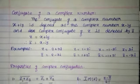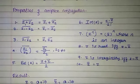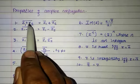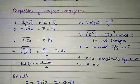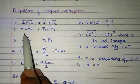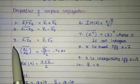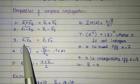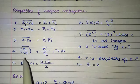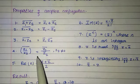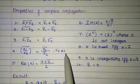Properties of complex conjugates. First: z1 plus z2, the whole bar, equals z1 bar plus z2 bar. Second: z1 minus z2, the whole bar, equals z1 bar minus z2 bar. Third: z1 into z2, the whole bar, equals z1 bar into z2 bar. Fourth: z1 by z2, the whole bar, equals z1 bar by z2 bar, where z2 is not equal to zero.